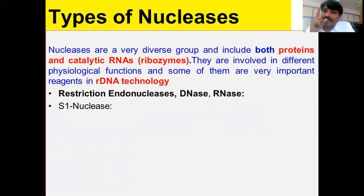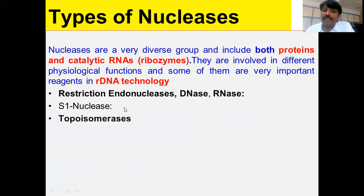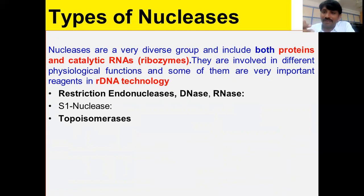S1 nuclease is another important nuclease — it is a single-strand-specific nuclease that can degrade both RNA and single-stranded DNA, and is useful in cDNA synthesis. Topoisomerases are involved in replication and resolve supercoiling, and topoisomerase-based cloning kits have also been developed.